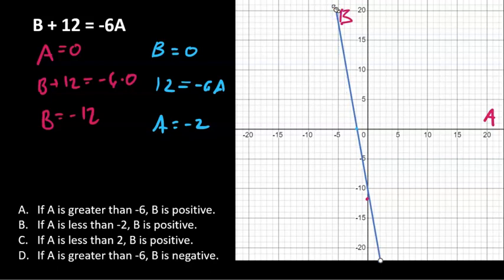Now let's check the solutions. Solution A: if a is greater than minus 6, minus 6 is here, then b is positive. We can see that it's sometimes positive, sometimes it is negative. This is incorrect.